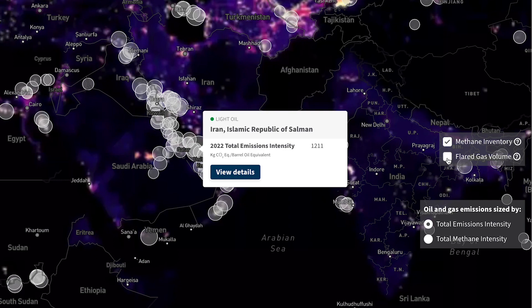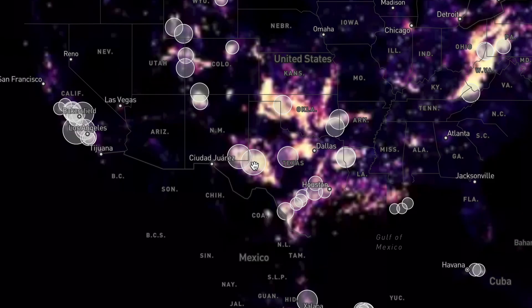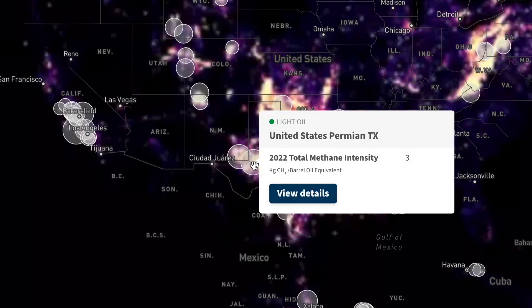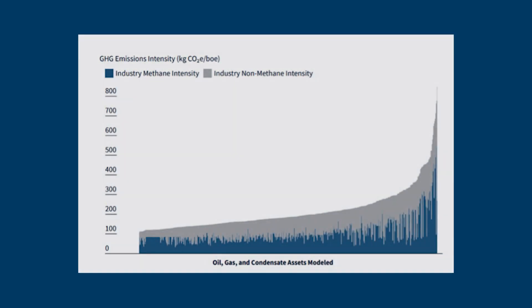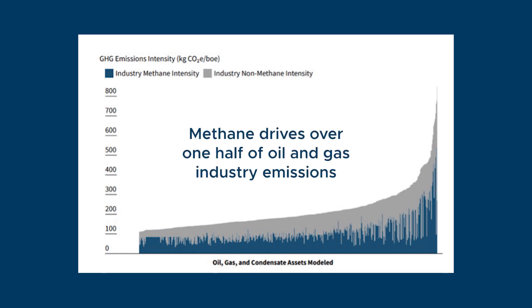The OCI Plus maps over two-thirds of the world's oil and gas resources and their associated carbon and methane emissions. The OCI Plus finds that on average, methane drives over one-half of oil and gas industry emissions.